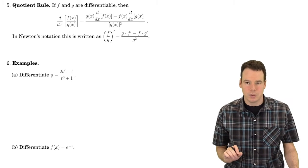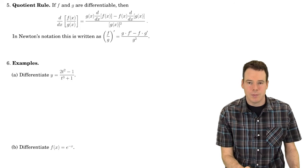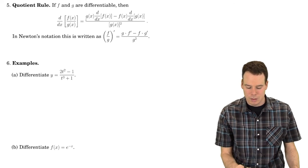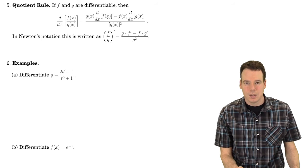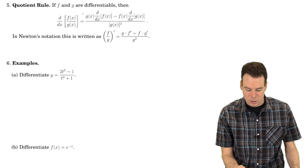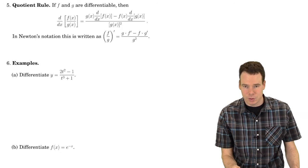Having just looked at the product rule, let's go ahead and look at the quotient rule. I want to compute the derivative of f divided by g. It turns out that we can piece together the derivative of the quotient involving the original functions and their derivatives. You take the derivative of the top function, multiplied by the bottom function, minus the top function times the derivative of the bottom function, and write that all over the bottom function squared.